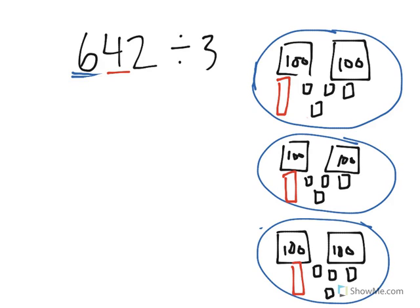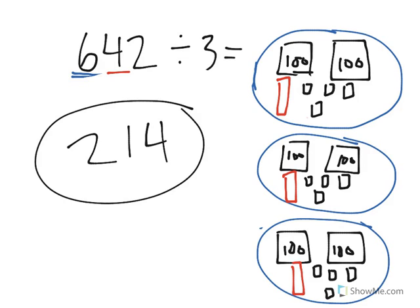So we started with 642. We divided it evenly. Each group, you can see, has two hundreds, one ten, and four ones. Which means that 642 divided by 3 is equal to 214.